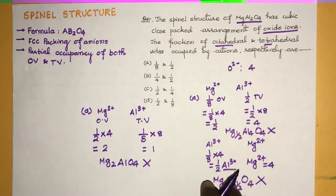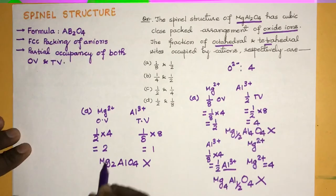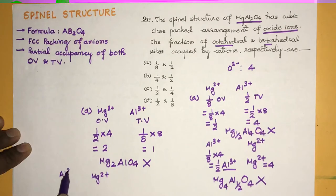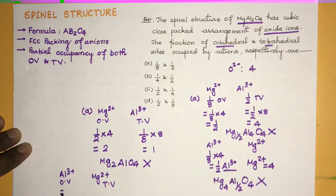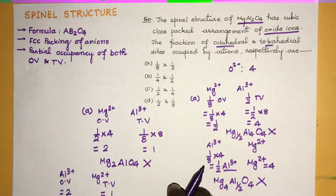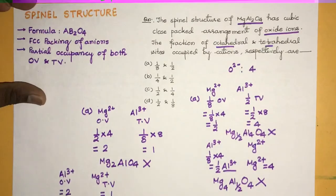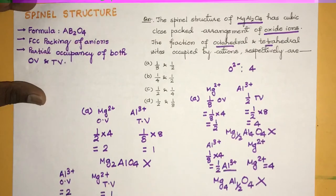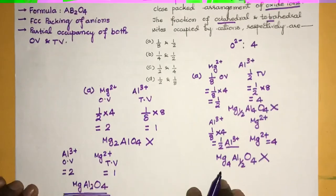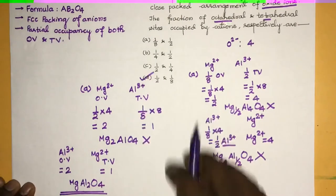Now take the second case in which Al3+ occupies 1/2 of the octahedral voids and Mg2+ occupies 1/8 of the tetrahedral voids. The effective number is 2 for Al3+ and 1 for Mg2+. So the formula becomes MgAl2O4 — this is correct! So the correct answer is Option D.